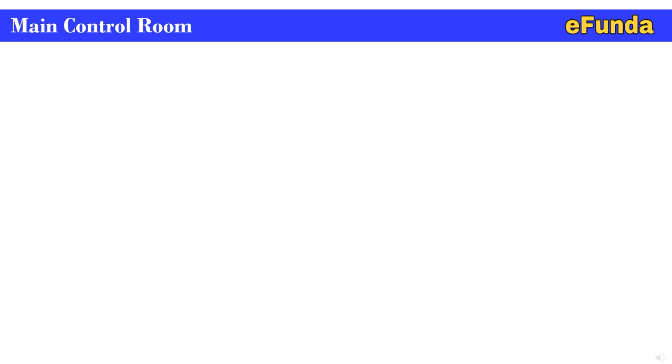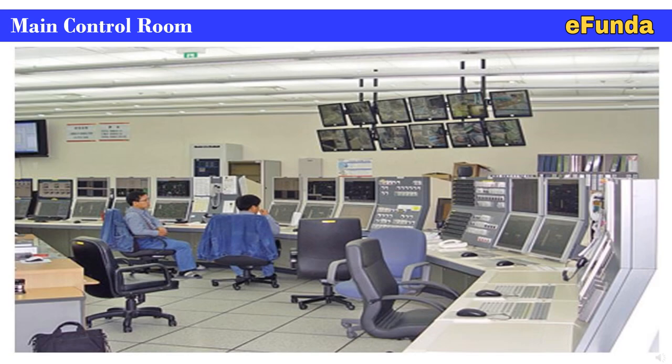So far we have seen various design considerations while designing the control room and the control room layout. Now we are viewing the main control room where operator consoles are shown and CCTV monitors or operating TVs are installed on top of the operator console to see the view of the process plant.